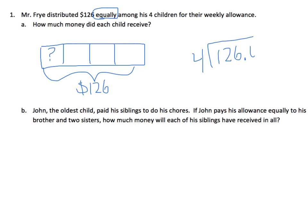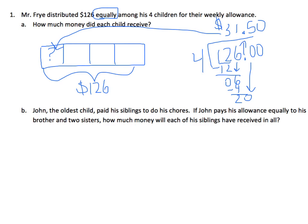Since this is money, I'm going to put a decimal and add two zeros. Four goes into 12 three times; subtract, nothing left over, bring down the six. Four goes into six once; subtract the four, bring down the two. Four cannot go into two, so I bring down the zero — and because I brought down that zero, I'll need to use the decimal. Four goes into 20 five times. Because it's money, I put a zero at the end, since we always have two decimal places for money. Each child received $31.50. That's my answer for the first part.